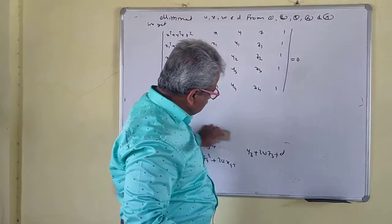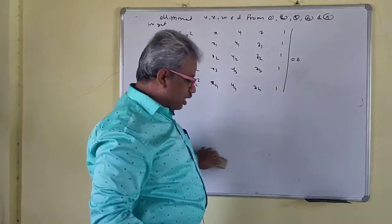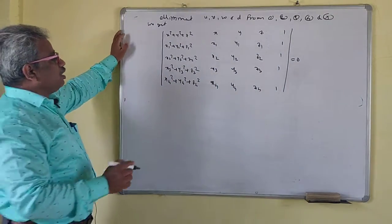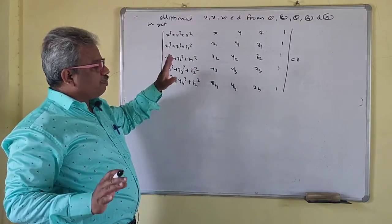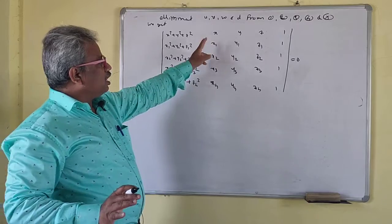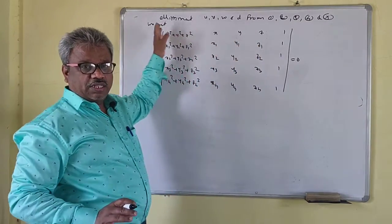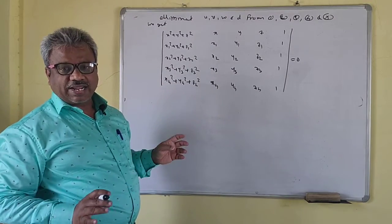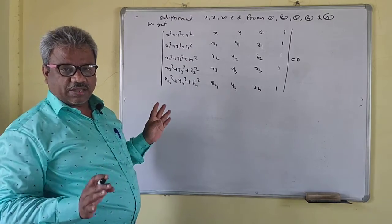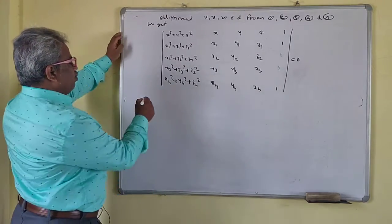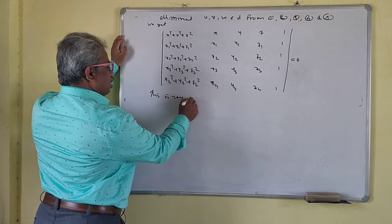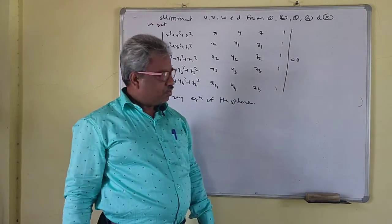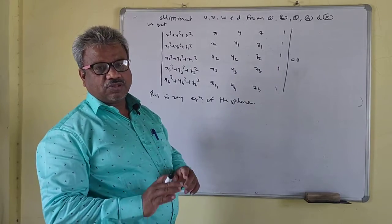This is a determinant of order 5. If you expand this, the coefficient of x², y², z² is the same everywhere, and there is no product term because x, y, z occur only in the first row. Therefore this expansion is a second-degree curve with equal coefficients for x², y², z² and no product terms — which means this is the required equation of the sphere passing through the four points.